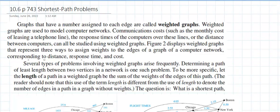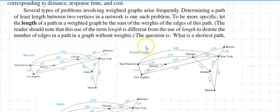Section 10.6 page 743 talks about the shortest path problems. Graphs that have a number assigned to each edge are called weighted graphs. Weighted graphs are used to model computer networks, communication costs such as monthly costs of leasing a telephone line, the response time of the computer over these lines, or the distance between computers. They talk about figure two, figure three, and show you some values. These are like routes for planes.